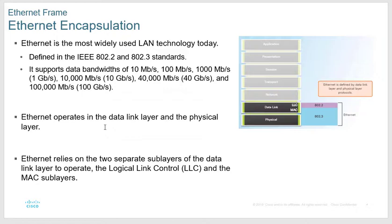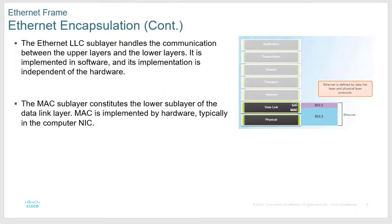Ethernet as a standard operates at the bottom two layers — layer one and layer two, the physical and data link layers. The data link layer is separated into two sub-layers: the LLC (logical link control) and the MAC sub-layer. The LLC kind of deals with software and communication between the upper and lower layers, while the MAC layer deals more with hardware — and this is where your MAC address comes from.